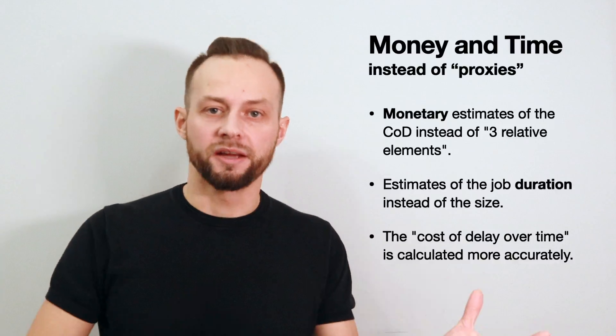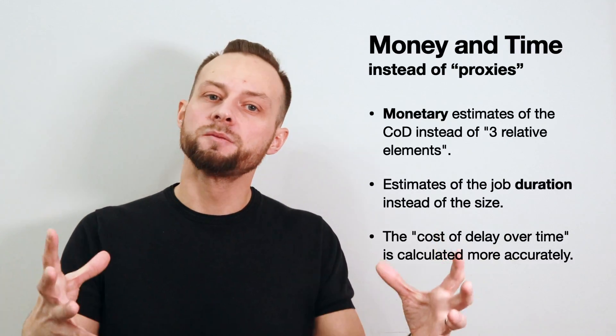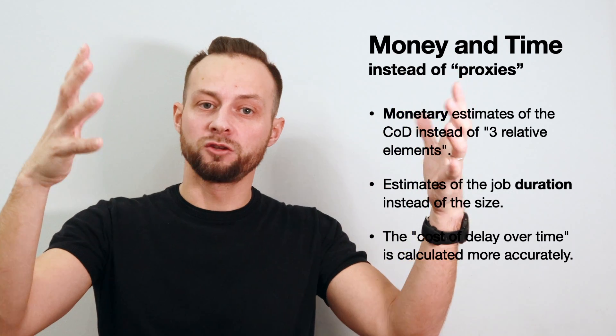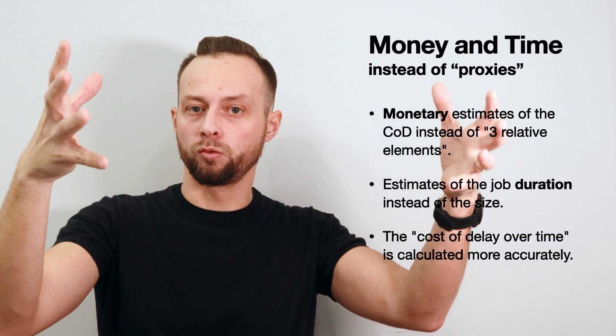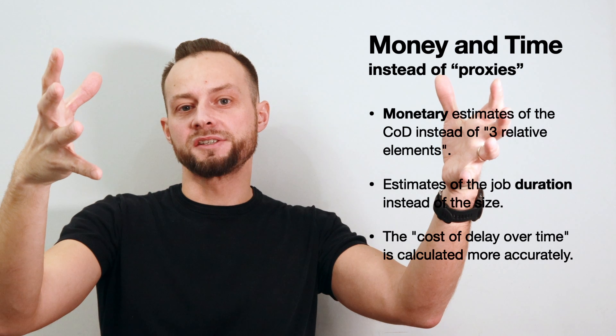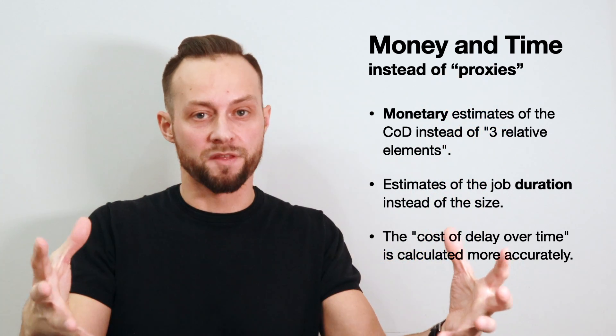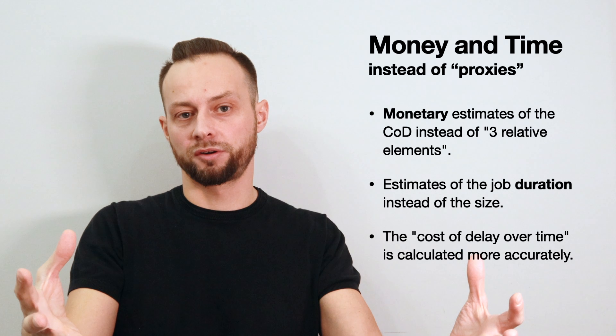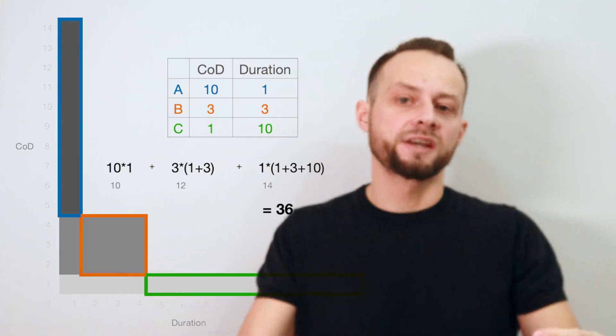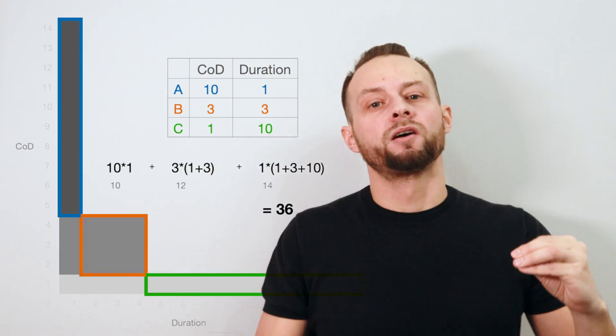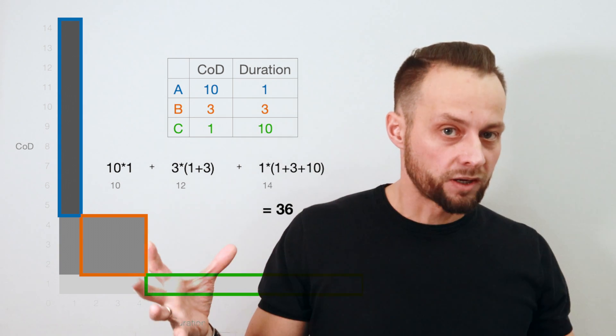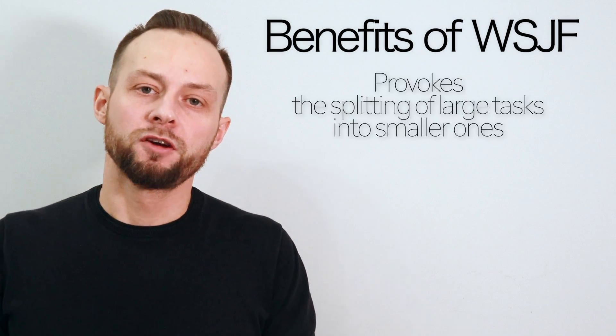In this procedure, the three CoD components and job size are substitutes for money and time. If you have good monetary estimates of the CoD, use them as the numerator. If you have good estimates of the duration of work, use them instead of the size — in this case you apply the idea of cost of delay over time more properly.